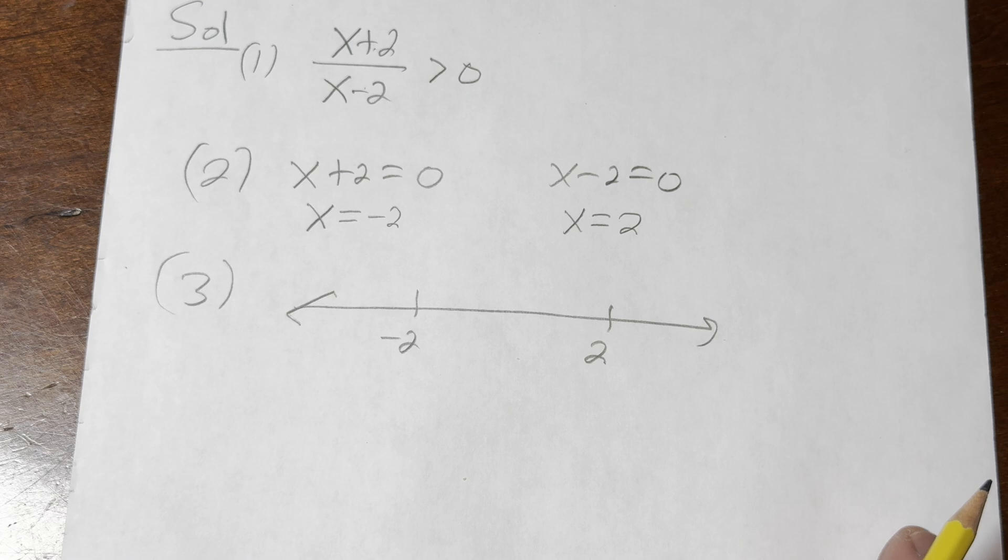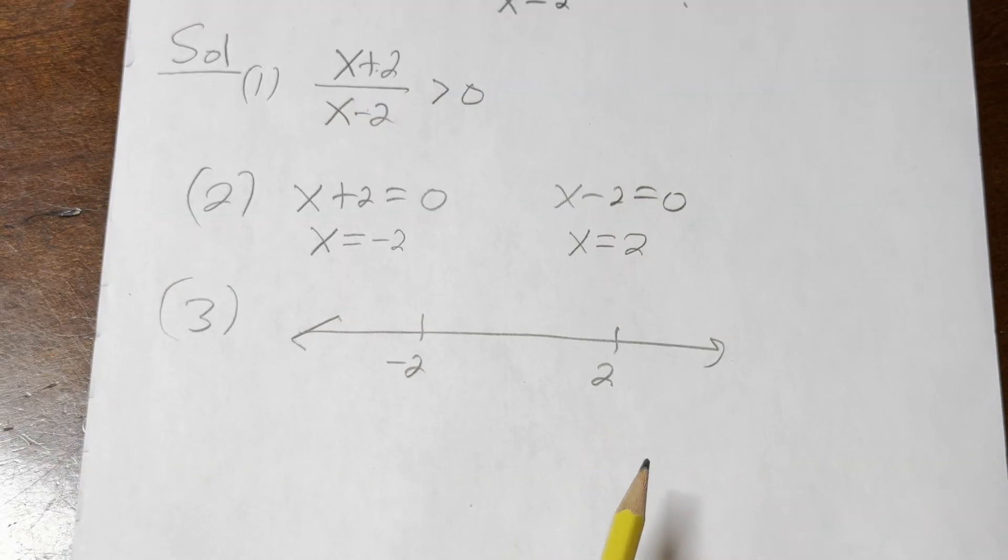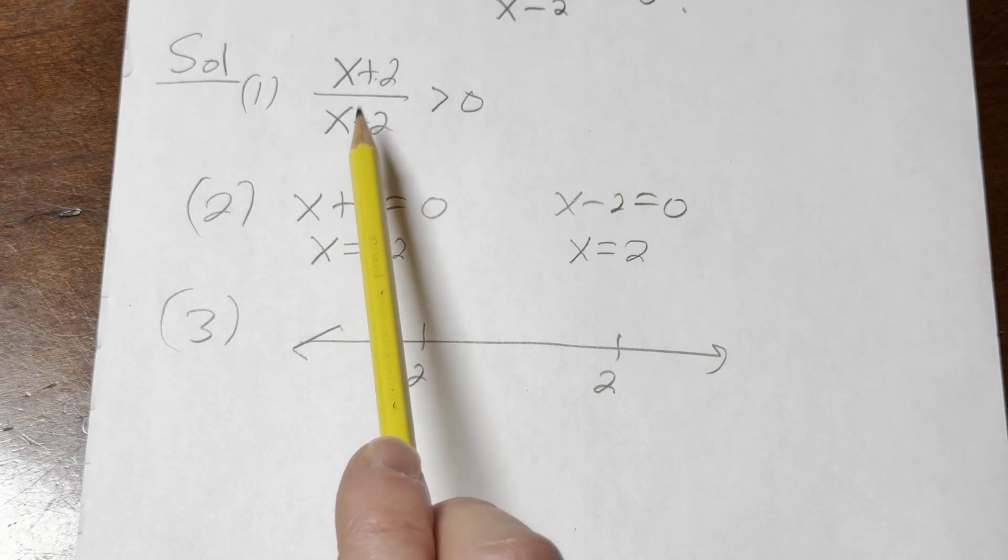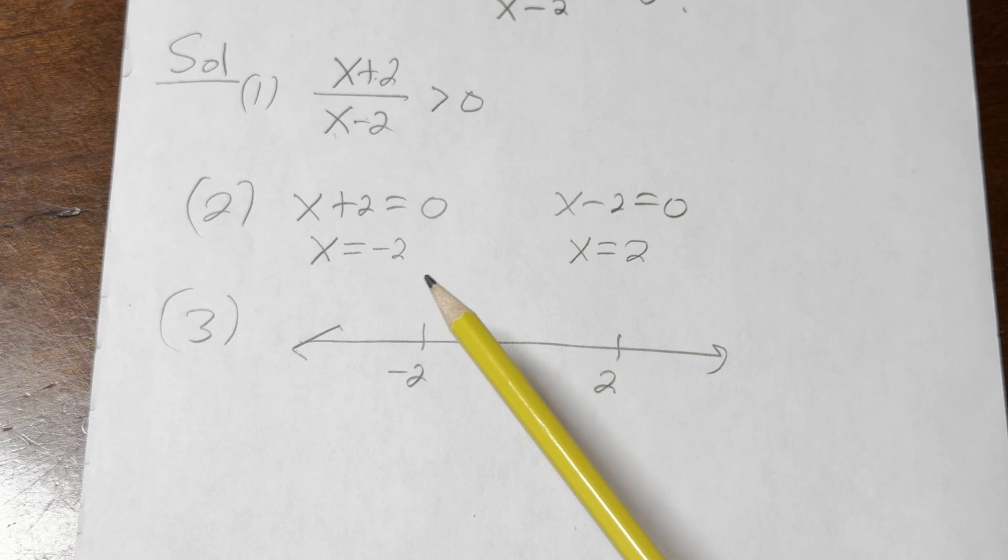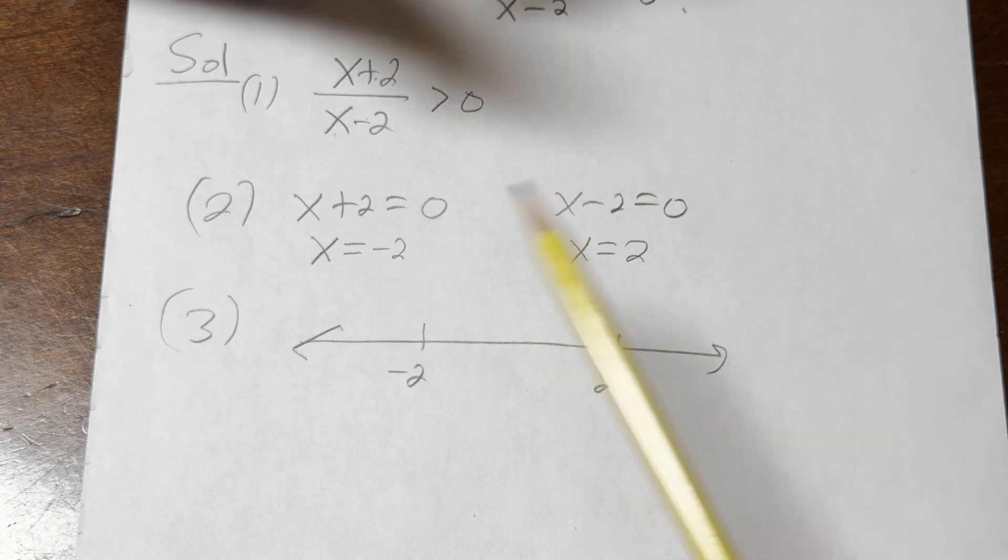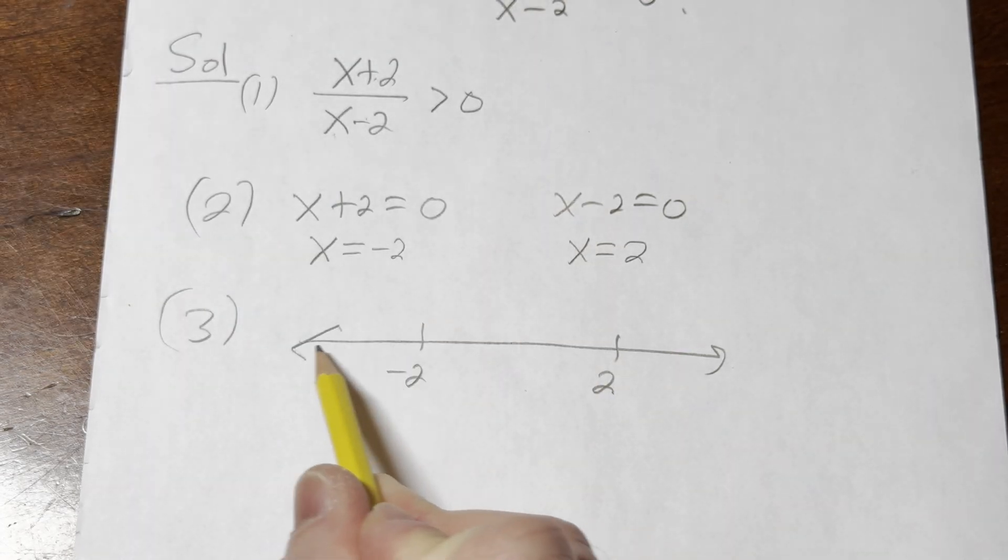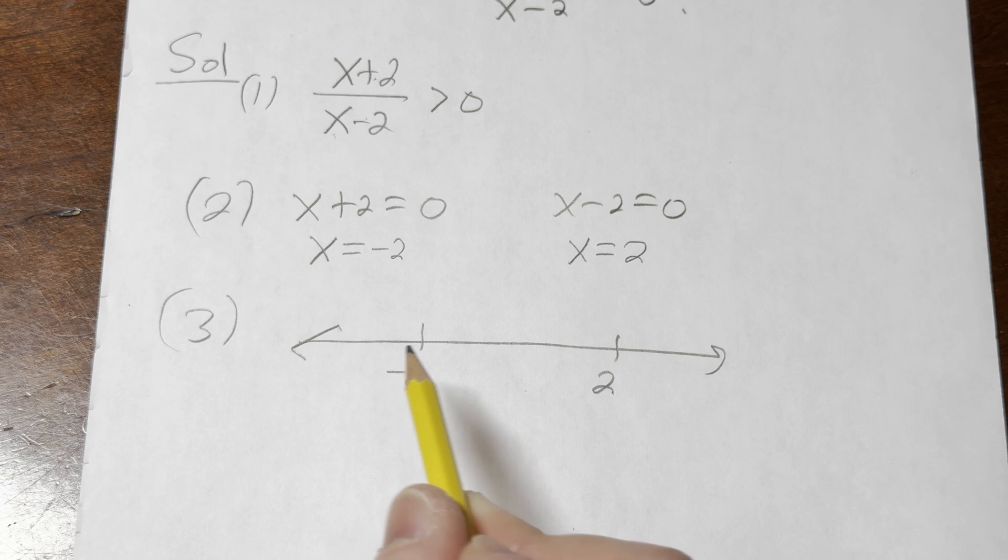And so what you want to do now is you want to pick test points and you want to plug them in to the original inequality which is this one. If it's true you shade, if it's not true you don't shade. All right. So we're going to pick any number less than -2. How about -3?